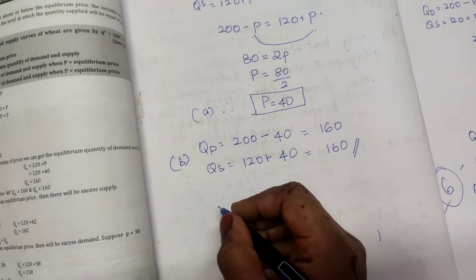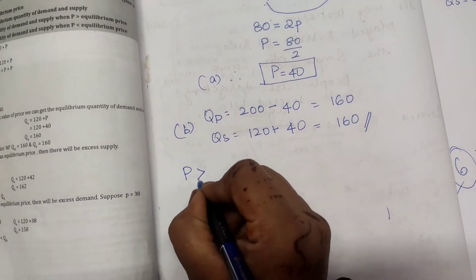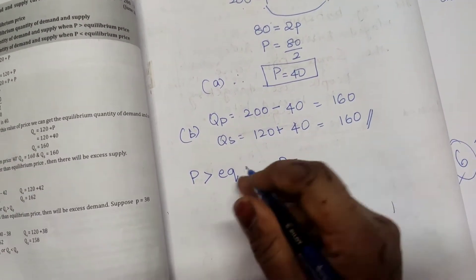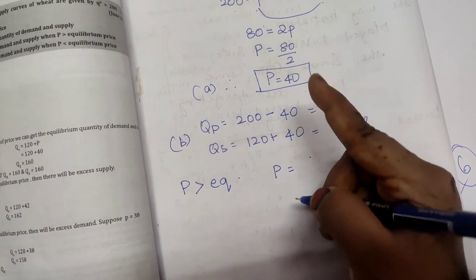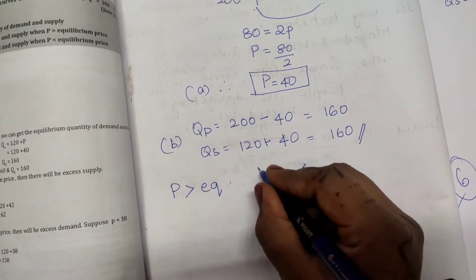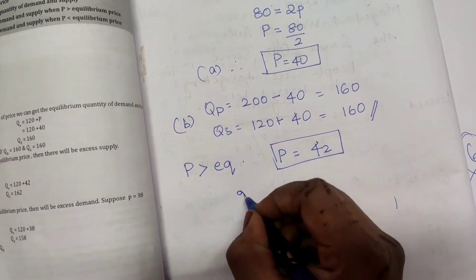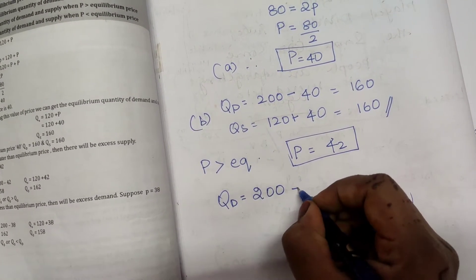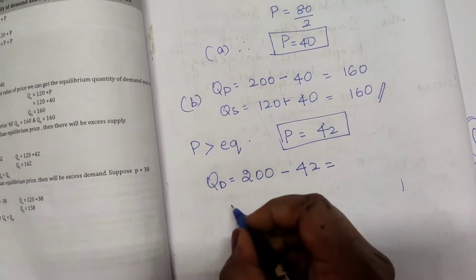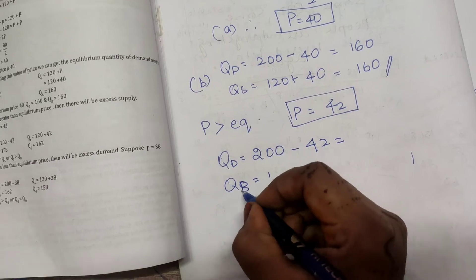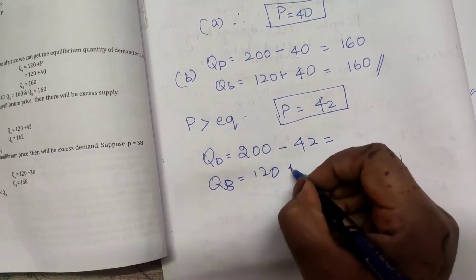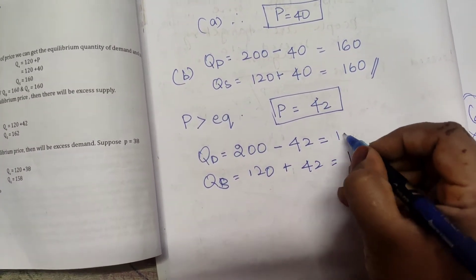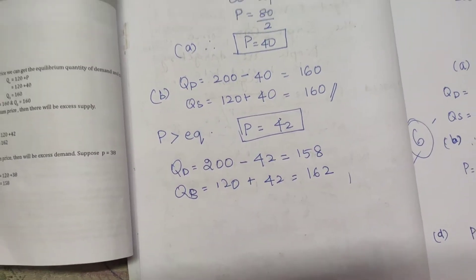Now we need to calculate what happens when price is greater than equilibrium price. Equilibrium price is 40, so we will take price as 42. Quantity demanded equals 200 minus 42, which equals 158. Quantity supplied equals 120 plus 42, which equals 162.